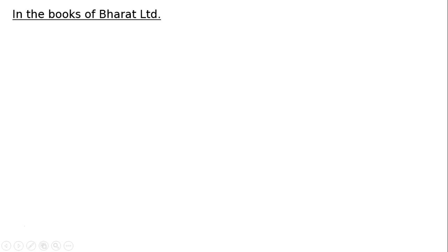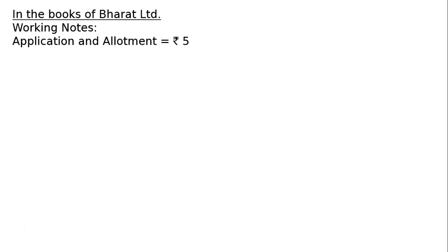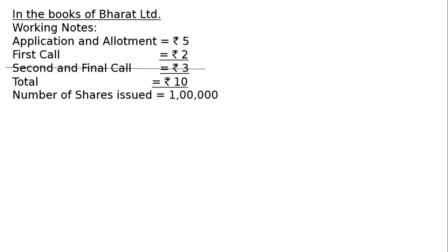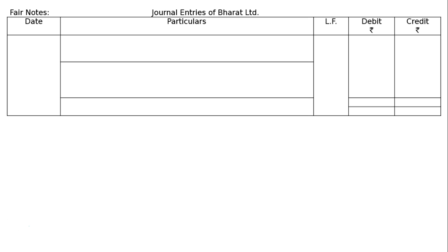In the books of Bharat Limited, working notes: application and allotment not given. We will have to find out — Rs. 2 is first call, Rs. 3 is final call. Hence, application and allotment etc. will be Rs. 5; first call Rs. 2; second and final call Rs. 3 has not been made. Total is Rs. 10. Number of shares issued: 1 lakh. Journal entries of Bharat Limited.